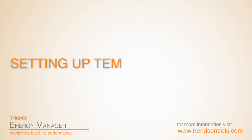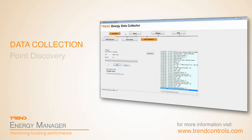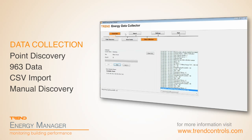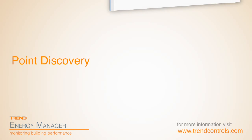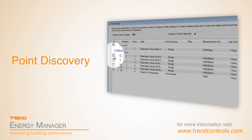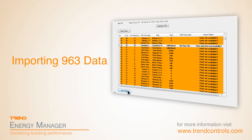Trend Energy Manager comes with an application called the Trend Energy Data Collector. It's a compact tool used to automatically import and record data from different sources into Trend Energy Manager for further analysis. Automatically discover points on the Trend BEMS, browse and choose which points you wish to record. Simply import the historical data from your 963 Supervisor database. Select the points you require and these will continue to record and automatically import data. Any data captured during this process can be analysed immediately.